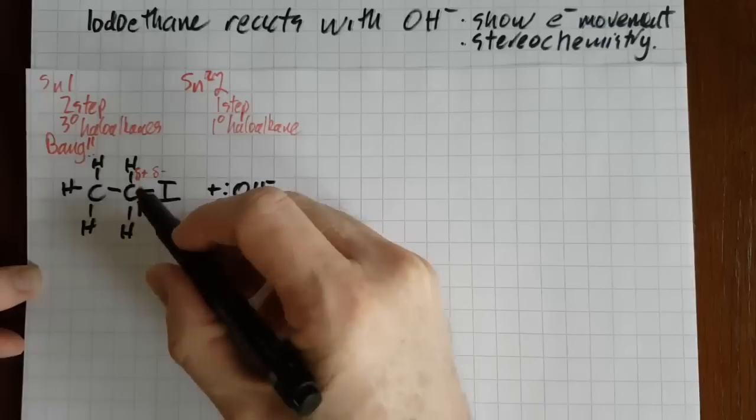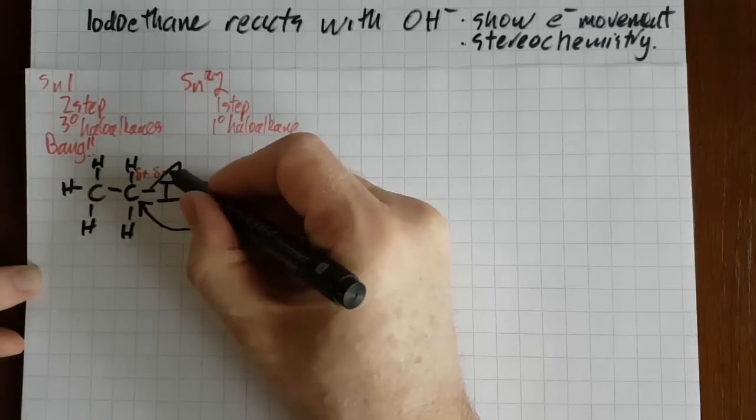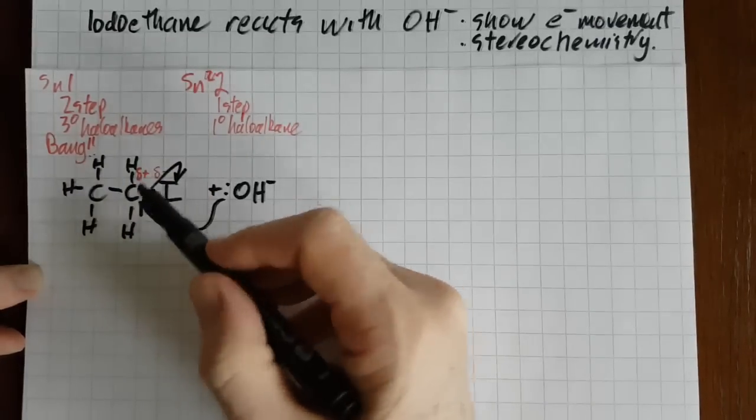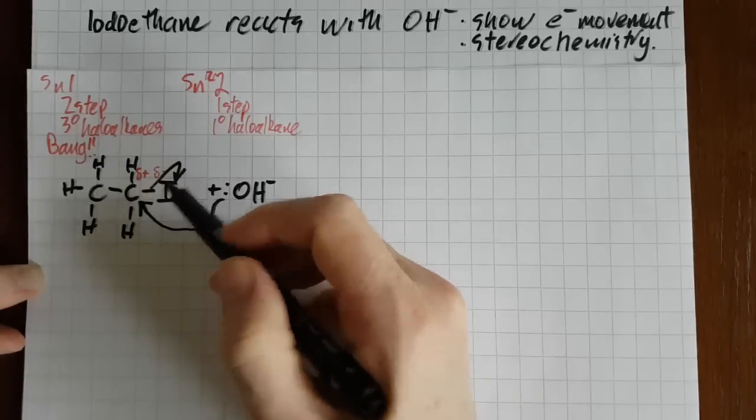Then this electron pair between the carbon and the iodine moves over to the iodine, and you'll lose another point if you don't draw it coming from the bond. So the two electrons there go towards the more electronegative iodine.